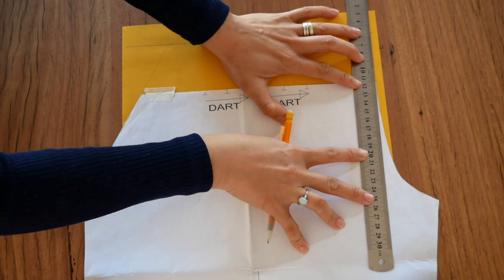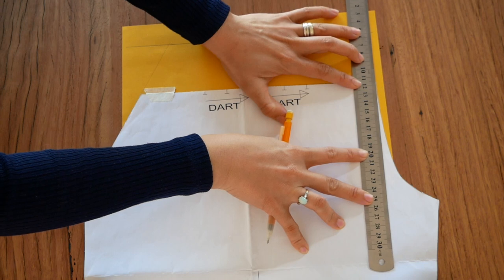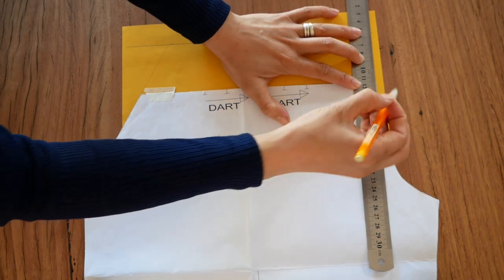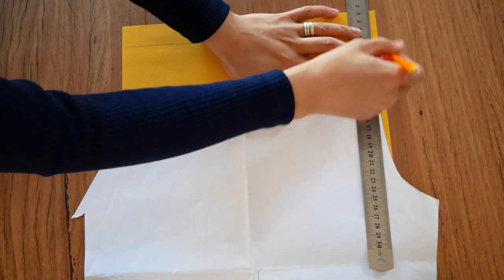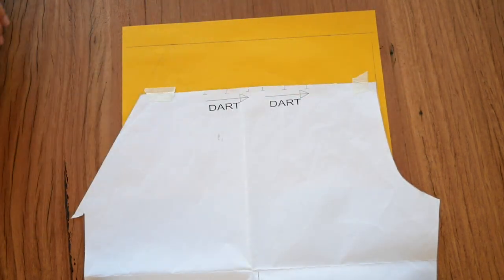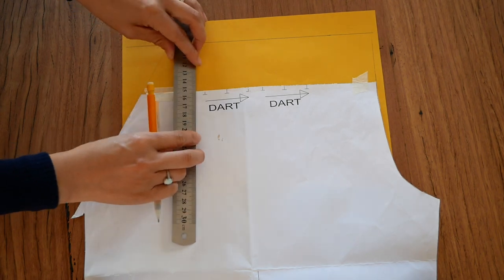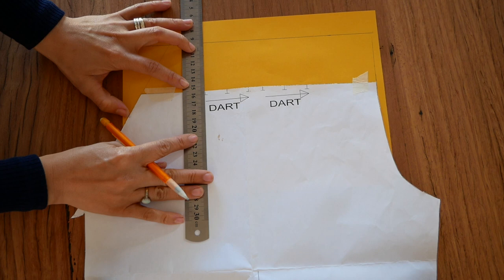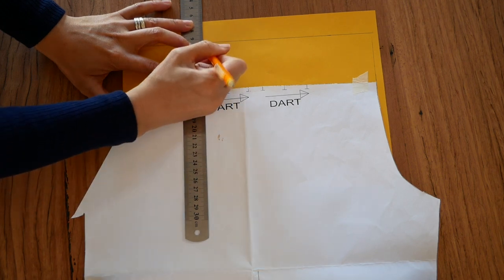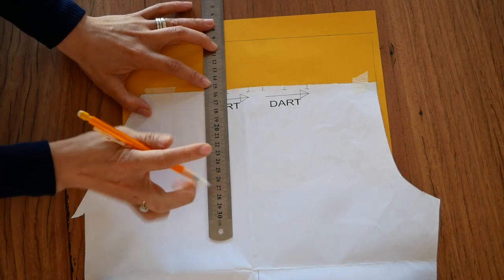Now for the front crotch length, let's take that line all the way up to the waistline that we marked at the beginning of the step. The Yoko pants include pleats at the front, so we're just going to transfer those markings to the new waistline.